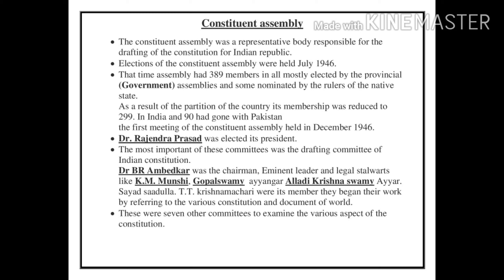At that time, the public had no rights to vote, but there were some provisional governments and they had legislature assemblies. So, the members of the provisional government elected their representatives. At that time, the assembly had 389 members — most elected by the provincial assemblies and some nominated by the rulers of the native states.